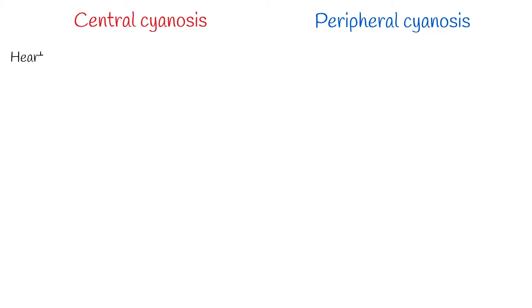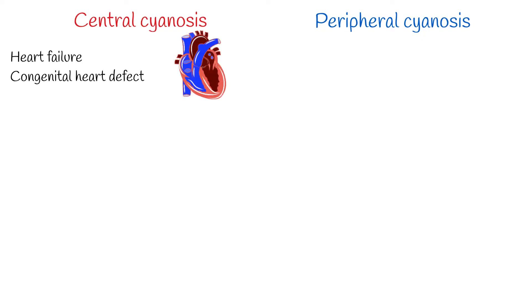Causes of central cyanosis: The most common causes of cyanosis are heart problems, such as heart failure or a congenital heart defect, which can cause central cyanosis by reducing the amount of oxygen-rich blood that is pumped to the body's tissues.